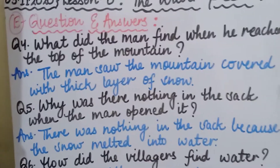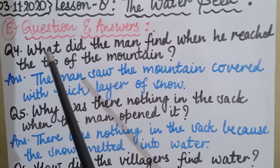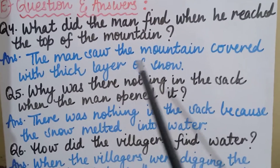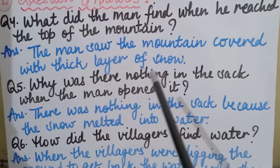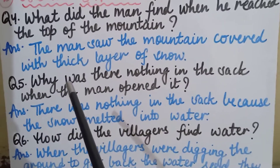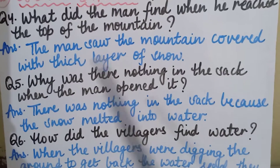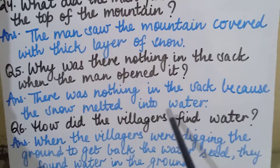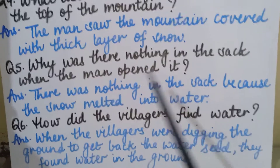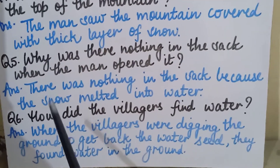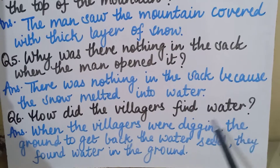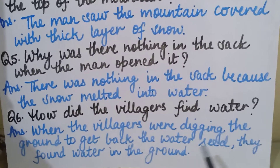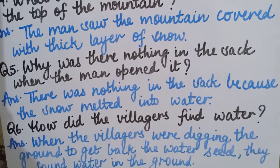Again, repeating questions four to six. Question four: What did the man find when he reached the top of the mountain? Answer: the man saw the mountain covered with a thick layer of snow. Question five: Why was there nothing in the sack when the man opened it? Answer: there was nothing in the sack because the snow melted into water. Question six: How did the villagers find water? Answer: when the villagers were digging the ground to get back the water seed, they found water in the ground.